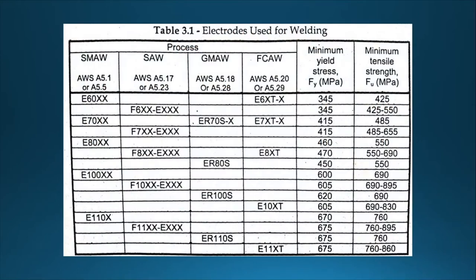We have here a table for the electrodes used in welding — these are the wires or electrodes that serve as the filler material during welding. For SMAW, we have electrode classifications E60XX, E70XX, E80XX, E100XX, and E110XX. Each electrode type has its own yield stress and tensile strength. For E60XX, the yield stress is 345 MPa, and the tensile strength used is 425 MPa.